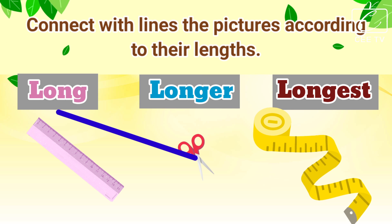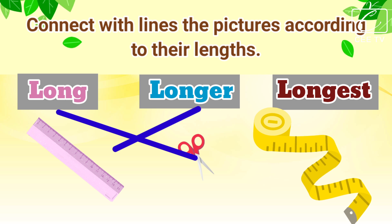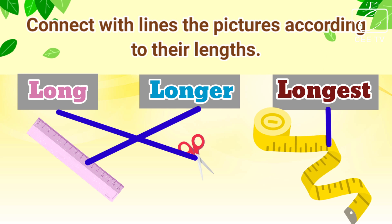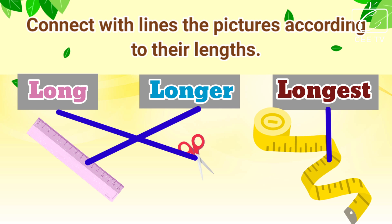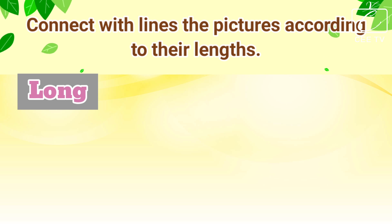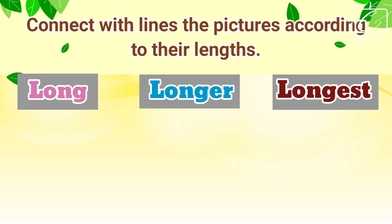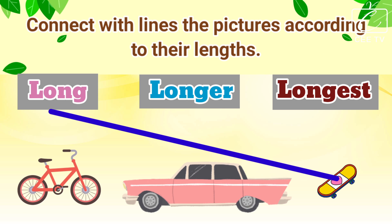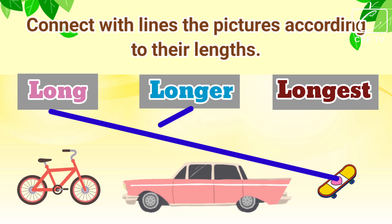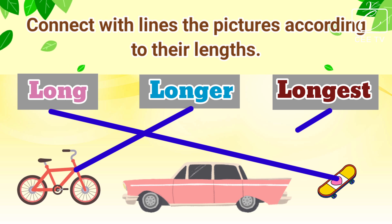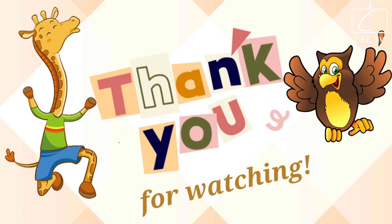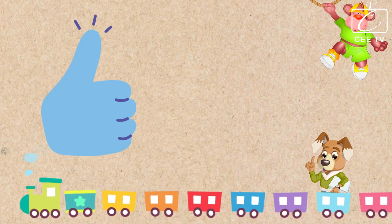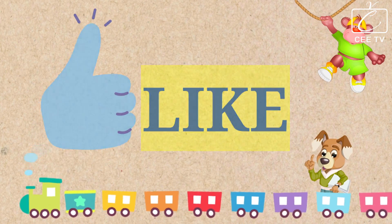The ruler is longer. And the tape measure is the longest. The skateboard is longer. The bicycle is longer.